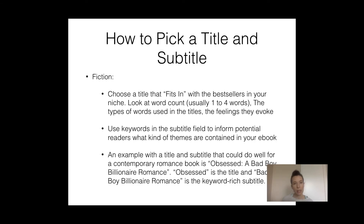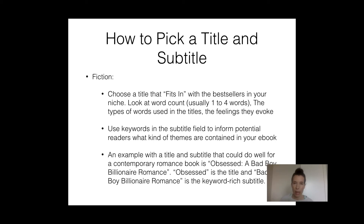For fiction books, it's best to choose a title that really fits in with the bestsellers in your niche. Look at the word count of the titles — generally one to four words. Look at the type of words used and the feelings they evoke. This is going to be different from niche to niche, so you have to go specifically into the category and subcategory you're targeting and look at those titles. You want to choose a title that can easily sit up there with the bestsellers and mesh in with the rest of the titles.